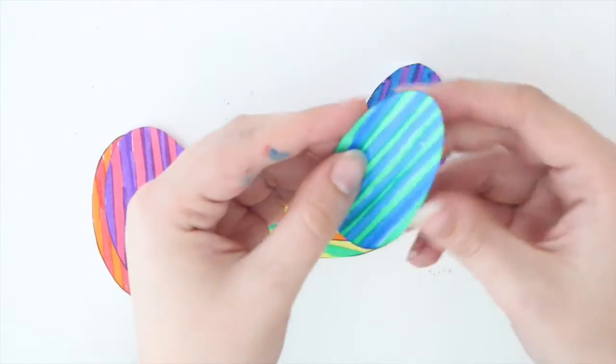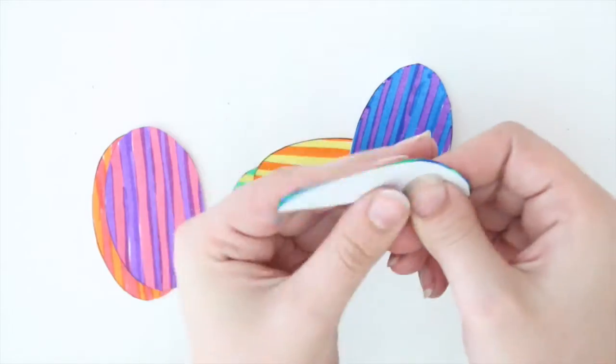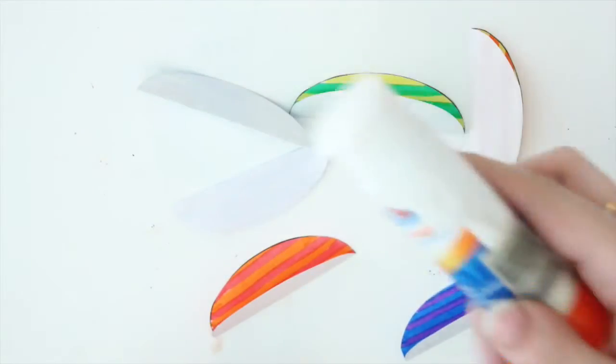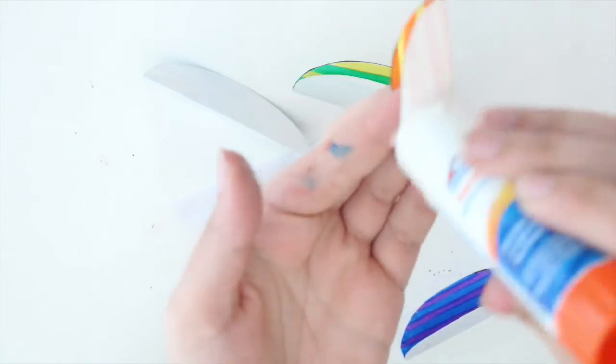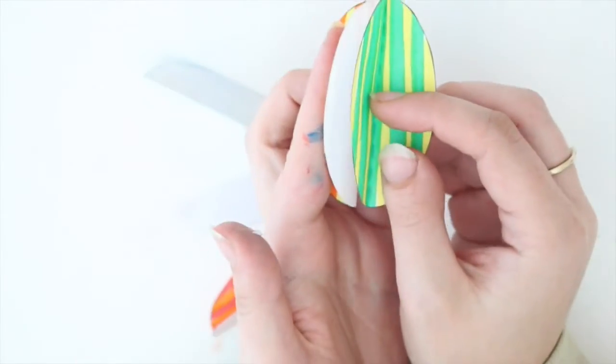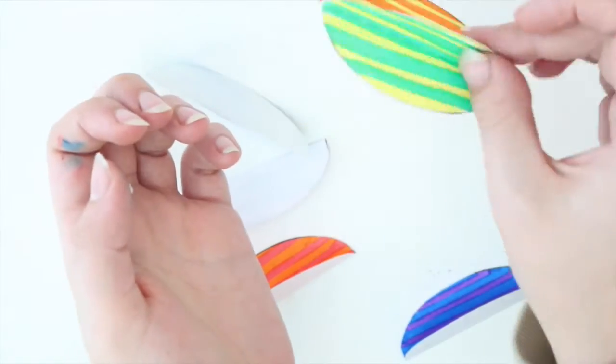For this next part, grab all your oval bug pieces and fold them in half with the colored side facing inwards so that you have the white on the outside. Then take a glue stick and run a little bit of glue along one side and stick it to another oval that you have folded in half. Do that to all of your oval pieces so they form almost like a fan.